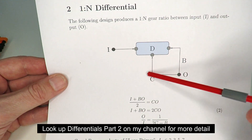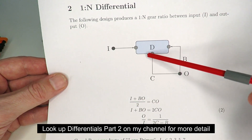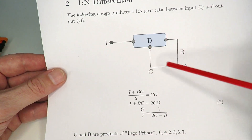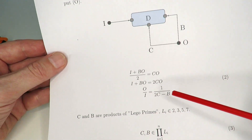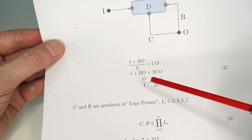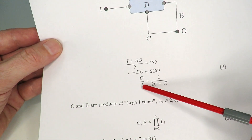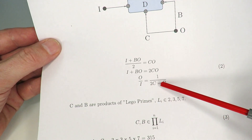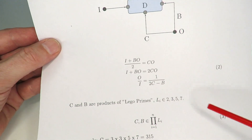There is also a connection between the output through a gear ratio C back to the barrel. If we do the mathematics and work out the ratio between the output and the input, you find that it's 1 over (2C − B).